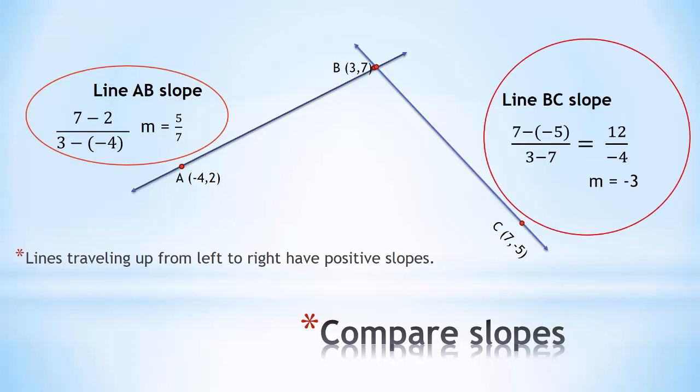Line BC on the right, if we calculate its slope, we're going to get -3. Taking my points, I started with (3,7), so 7 minus -5 over 3 minus 7 gave me 12 over -4, which reduces to -3. We can see that that line is traveling down from left to right and it has a negative slope. That is true of all lines going down as you look at them from left to right.